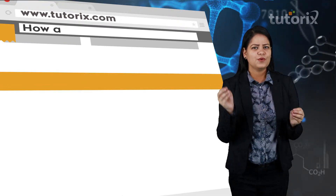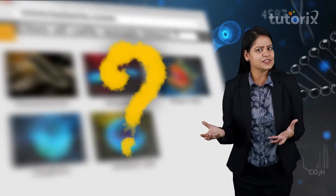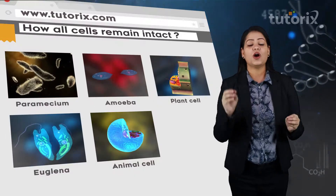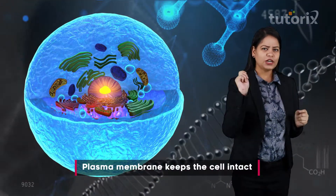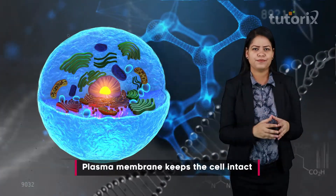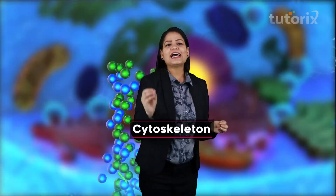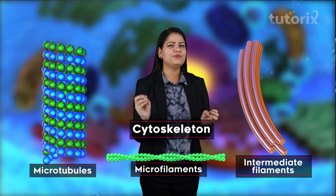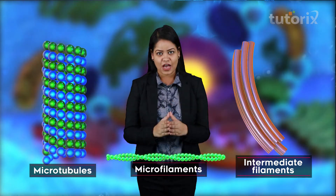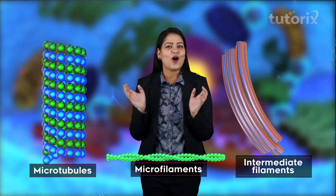Have you ever thought what keeps our cells intact? Do they also have a skeletal system of their own? Until now we learned that the plasma membrane or the cell membrane helps the cell to keep intact, but a major role is played by the cytoskeleton — simply the skeleton present inside the cell. Let us talk about the skeletal system of the cell, or cytoskeleton.